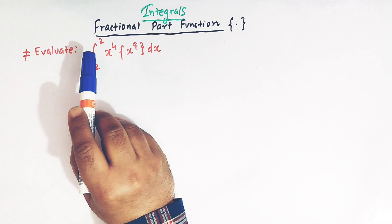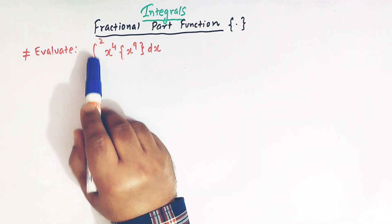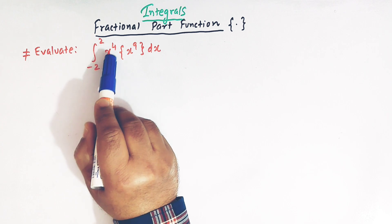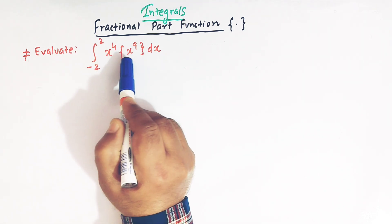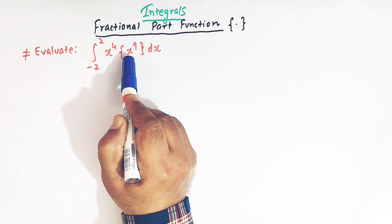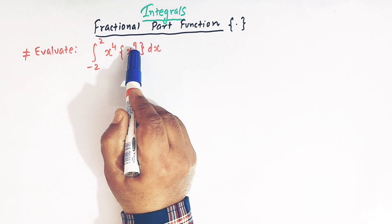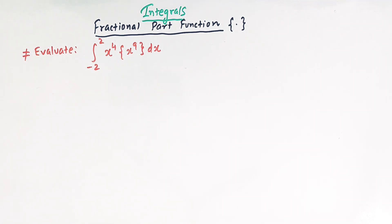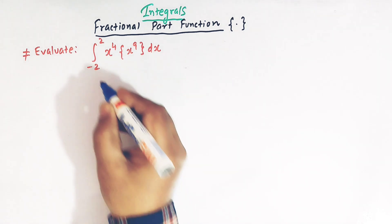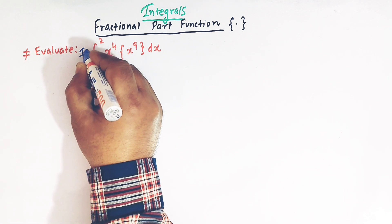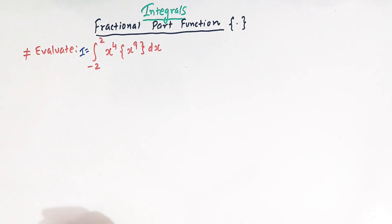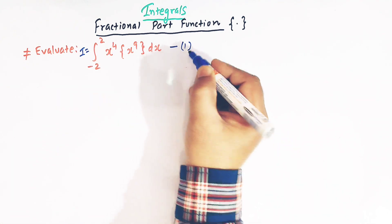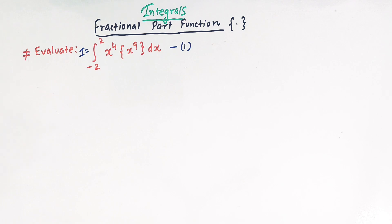So here we have to evaluate this integral that is from minus 2 to 2, x raised to 4 and we have the fractional part of x raised to 9. So let us start. Here what we will do — let us first call this integral as I, and here we can take it as integral number 1.